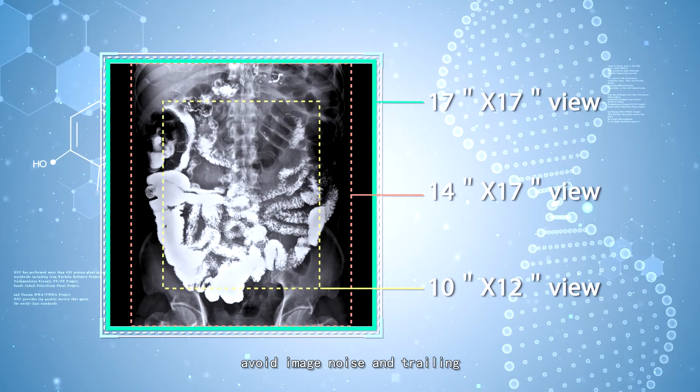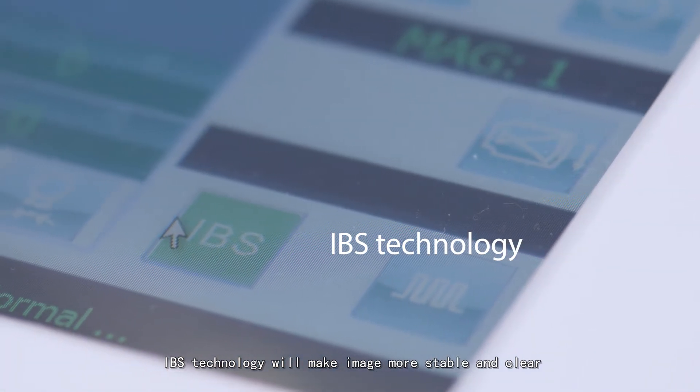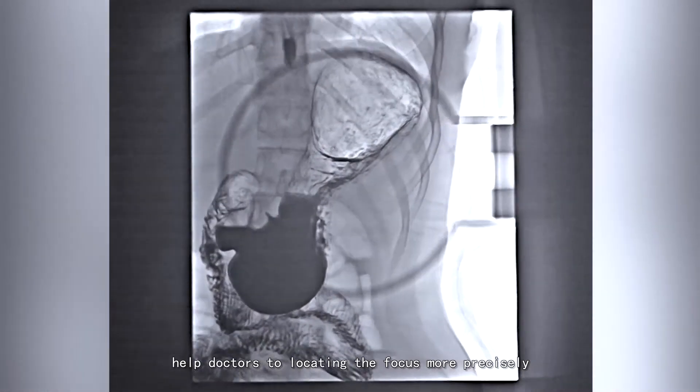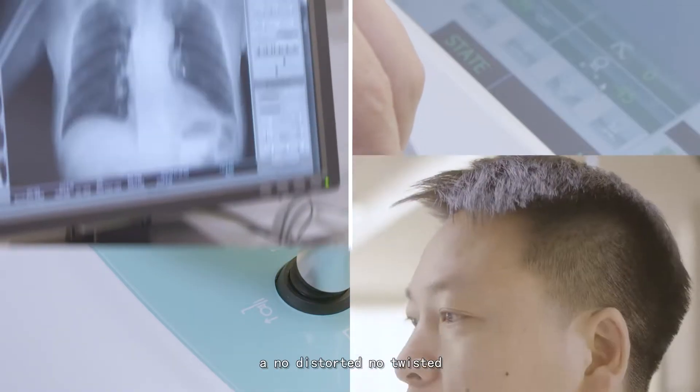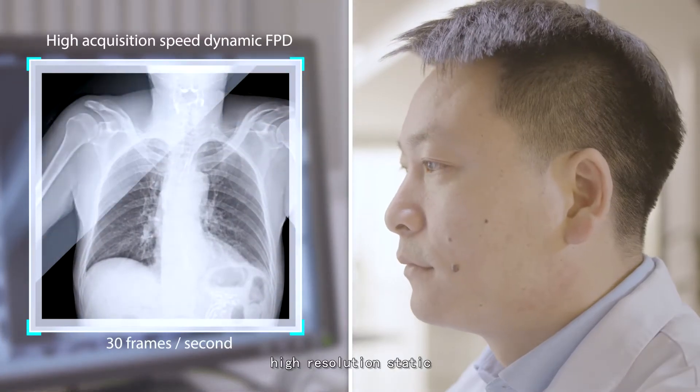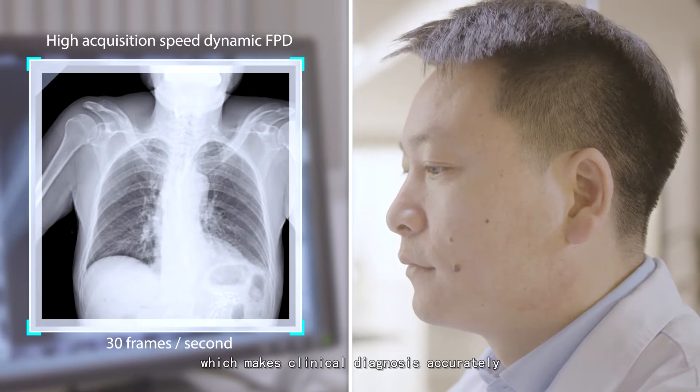IBS technology avoids image noise and trailing, making images more stable and clear, helping doctors locate the focus more precisely. The dynamic flat panel detector brings no-distortion, no-twisted, high-resolution static and dynamic images, which makes clinical diagnosis accurate.